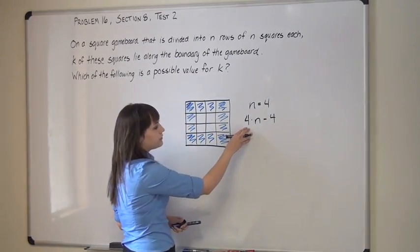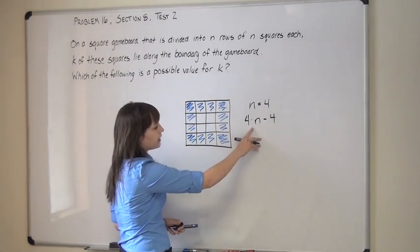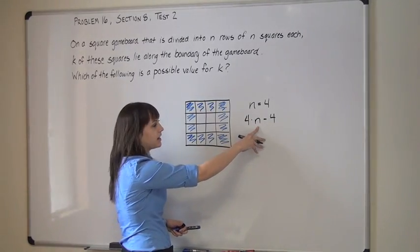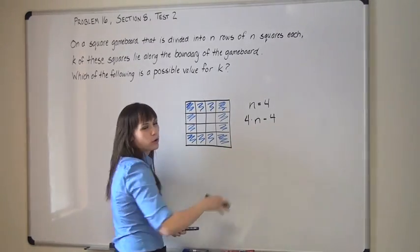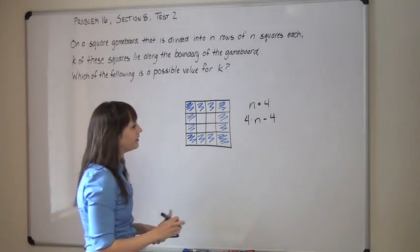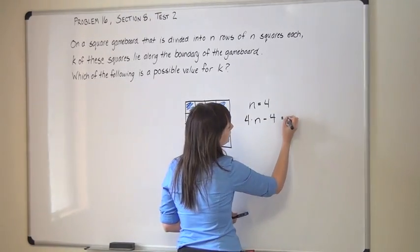So, I have 4 sides times the number of squares on that side, subtracting out the four corners that you'll end up over-counting. And that equals k.